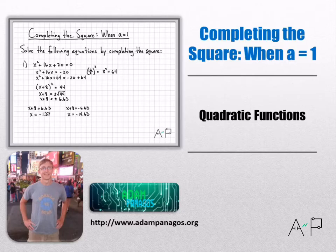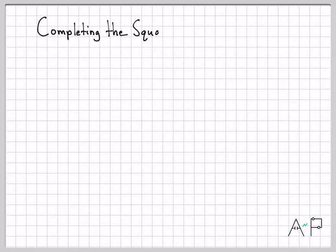All right, let's work a few examples of solving equations by completing the square. For the special case now of a equals 1, so we'll keep things simple to start, and we'll work some examples later when a is not equal to 1. But for now, a is going to be equal to 1.